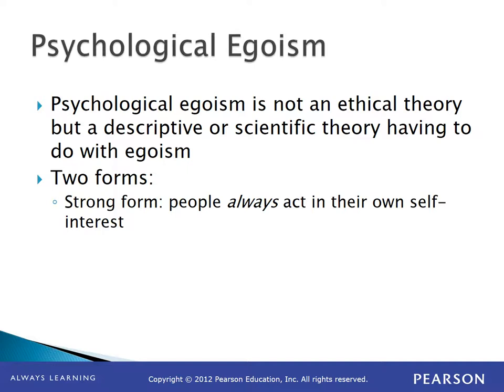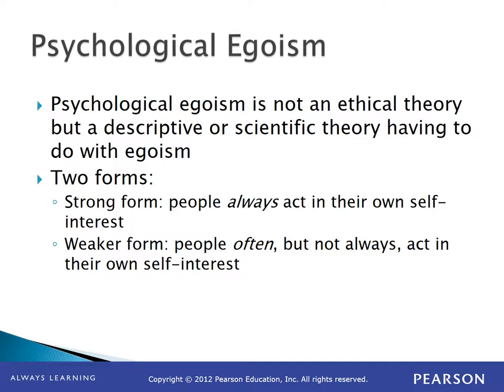Strong-form psychological egoism says that people always act in their own self-interest. People were born selfish — we came out of the womb with our fists clenched, demanding the world serve us, believing we were the center of the universe. Everything a human being does is ultimately done in their own self-interest. The weaker form says that people often — or generally — act in their self-interest, but not always. Sometimes people are able to rise above their own self-interest.